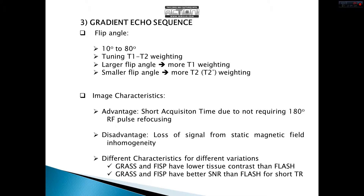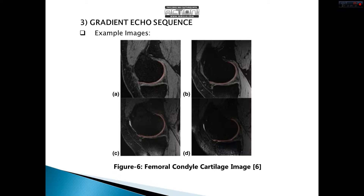In real T2-star weighting, if we consider image characterization, we will see that this type of sequence has an advantage of short acquisition time due to not requiring a 180-degree pulse. However, it has a disadvantage of signal loss from static magnetic field inhomogeneity. Additionally, there are some advantages and disadvantages that change with respect to applied variations. For example, GRASS and FISP have lower tissue contrast than FLASH, but they have better SNR than FLASH at short TR. Here we can see some example images obtained by gradient echo sequence. This image is taken from temporal condyle cartilage.